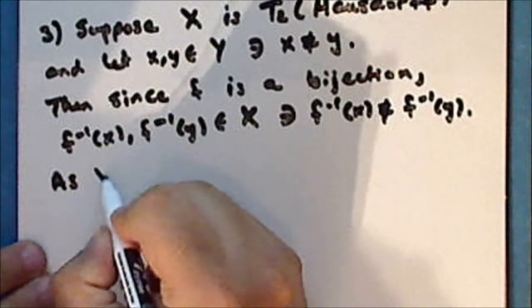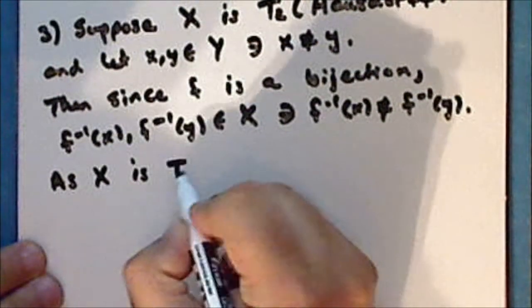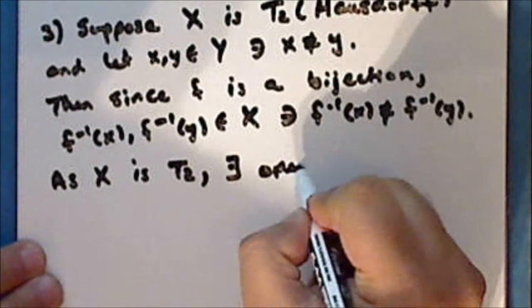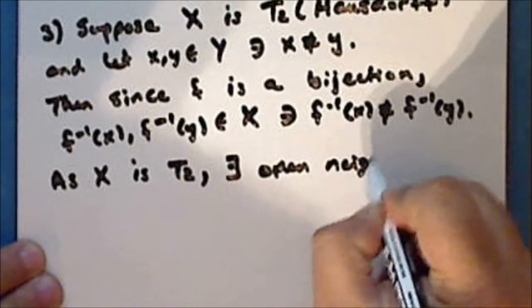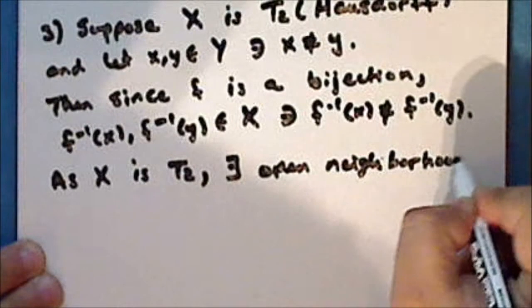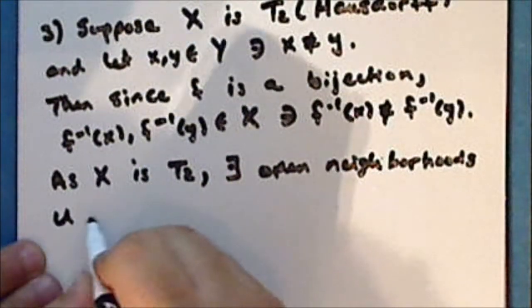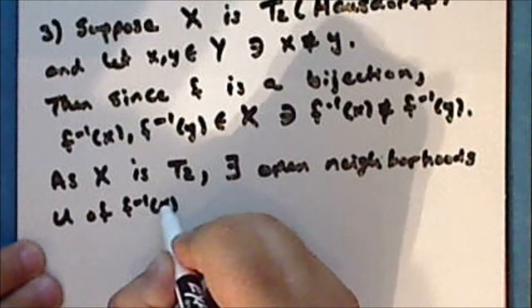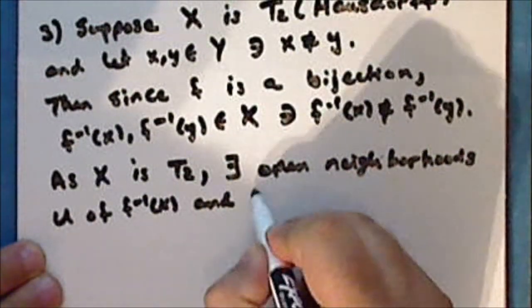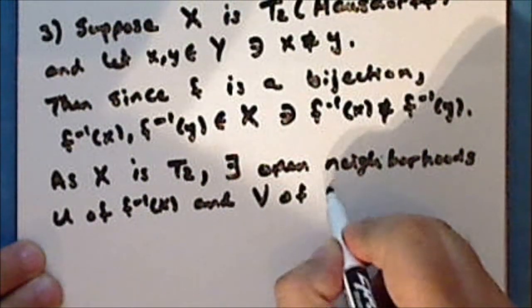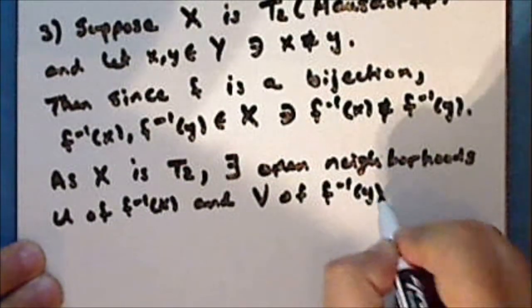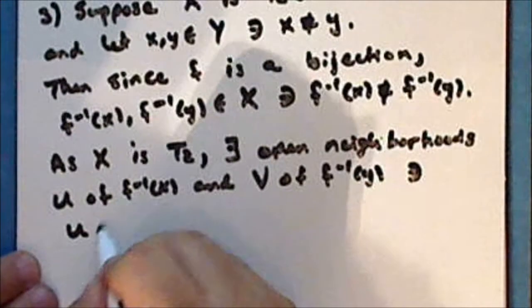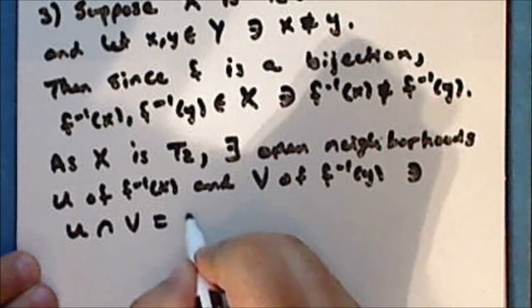So as the space X is Hausdorff, there exist open neighborhoods u of the inverse of x and v of the inverse of y, such that the intersection of u and v is empty.